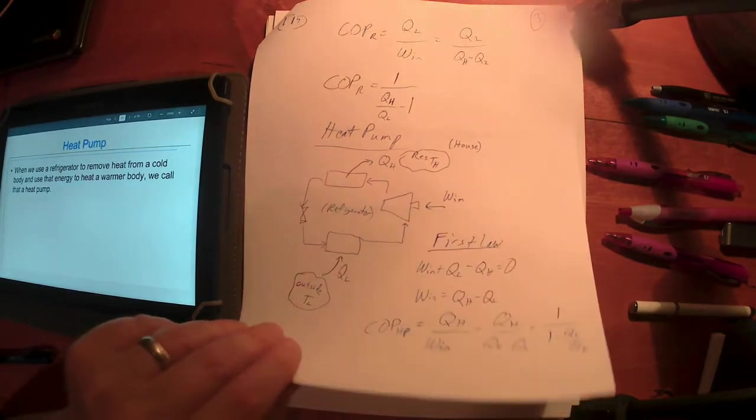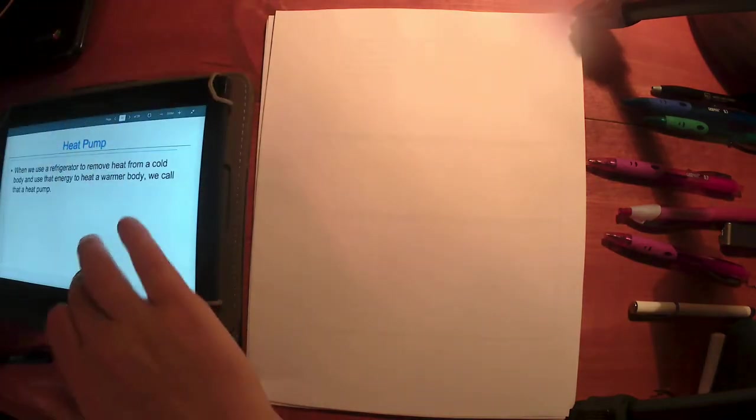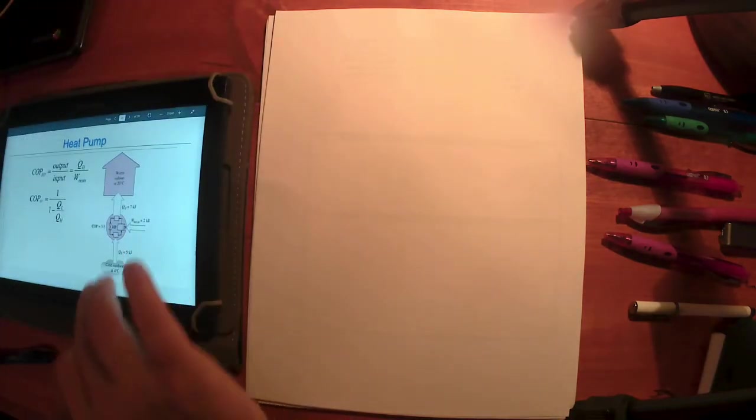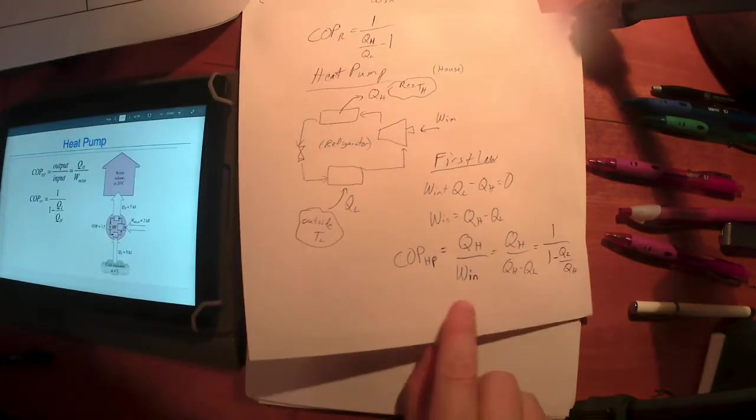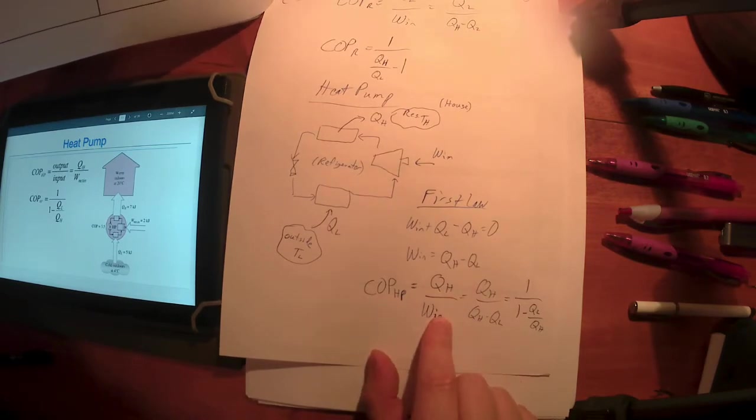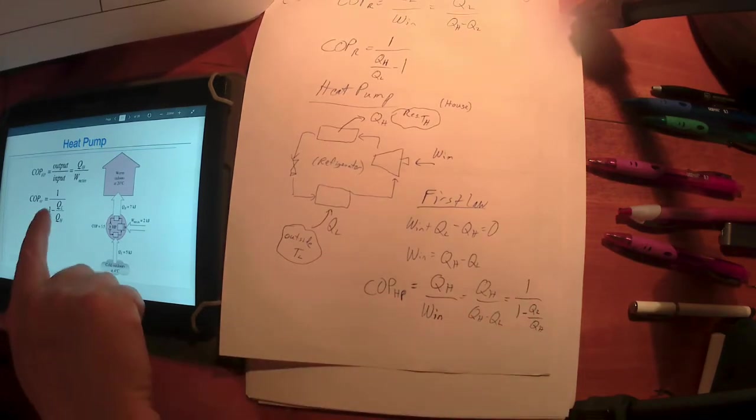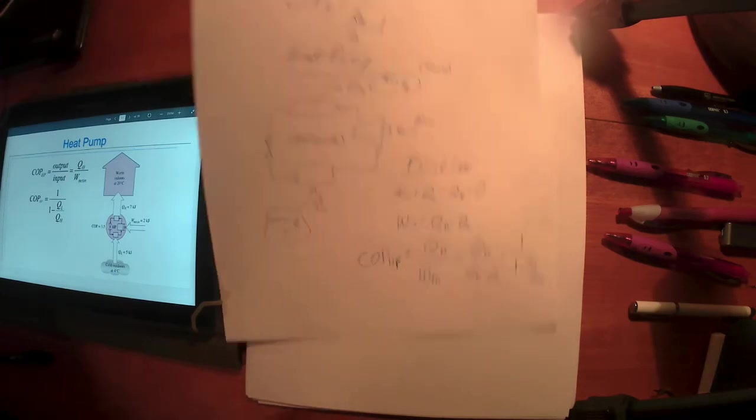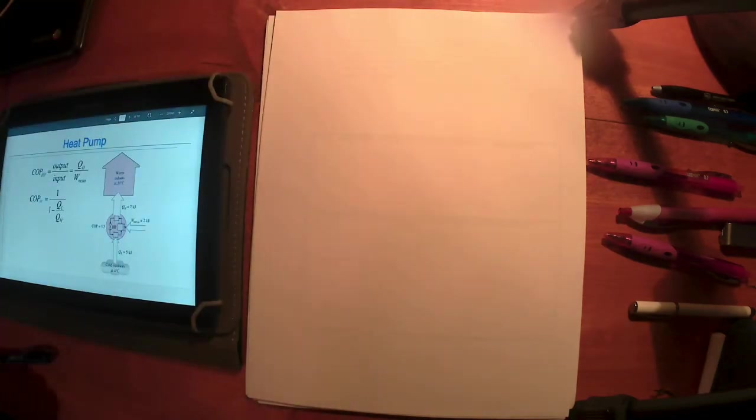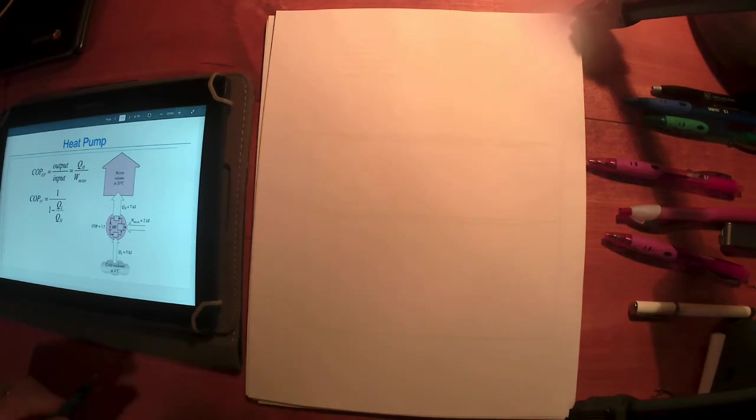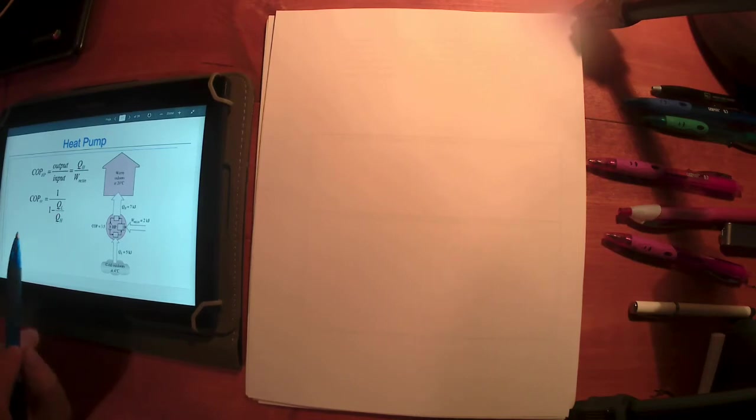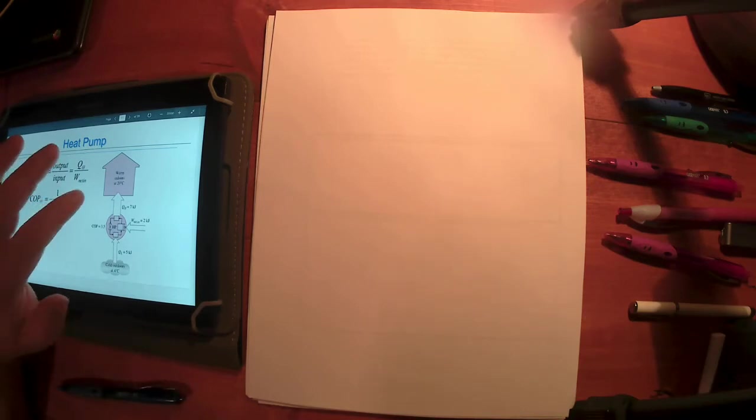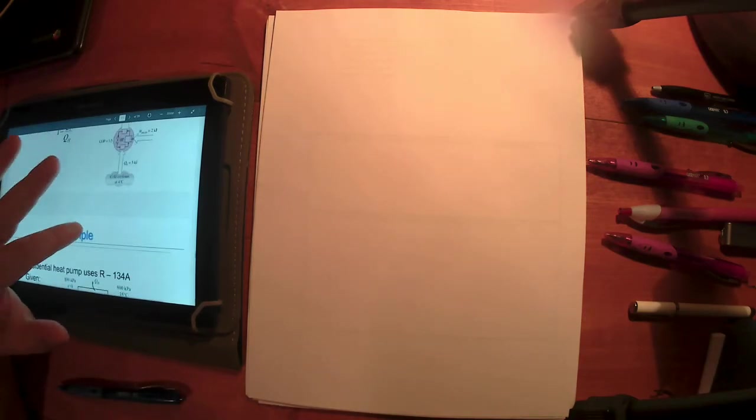This expression we derived here—coefficient of performance is what you want divided by what you've got to do—one over one minus the ratio of Q's. We're going to talk, not at the end of this video but by the end of this lecture, lecture 16, about why is this ratio of heat transfers important. What's the big deal? Well, that's coming.